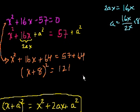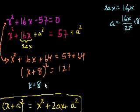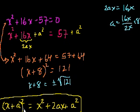We can just take the square root of both sides. If we take the square root of both sides, we get x plus 8 is equal to plus or minus the square root of 121. And what's the square root of 121? It's 11.